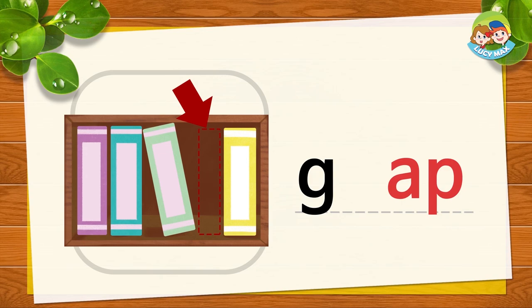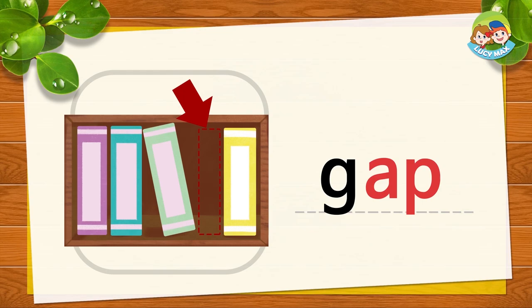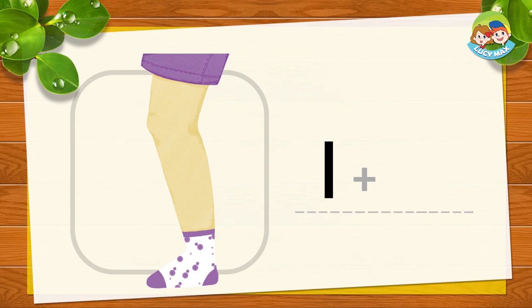Look at the arrow in this picture — that is a lap. L-AP together is lap. Lap, lap, lap. Now you try.